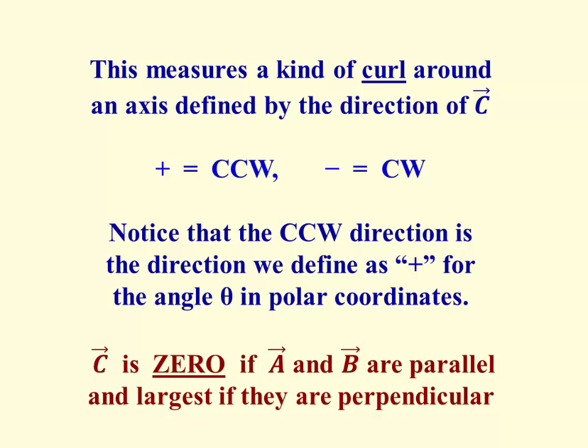That rotation is a kind of curl, and I use that word deliberately because there is a vector operator called the curl, which is the gradient operator crossed into a vector. And the other detail is that the vector C is zero if A and B are parallel, and the vector C has its maximum value when A and B are perpendicular. You probably remember that from torque.